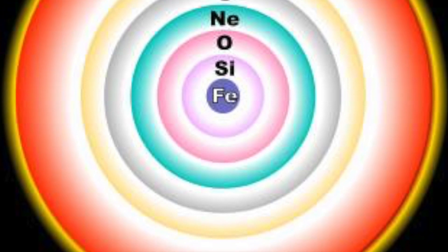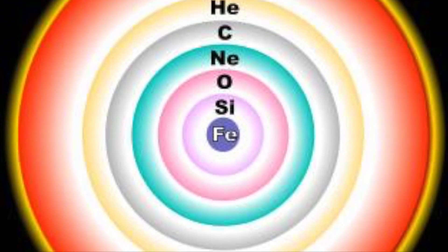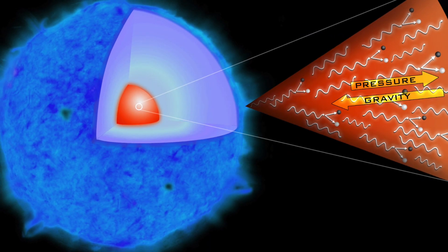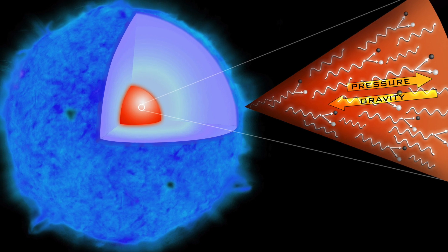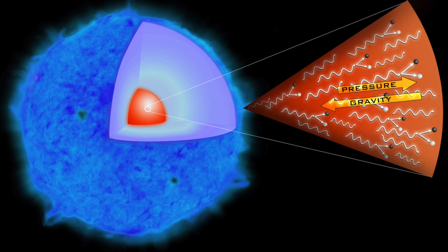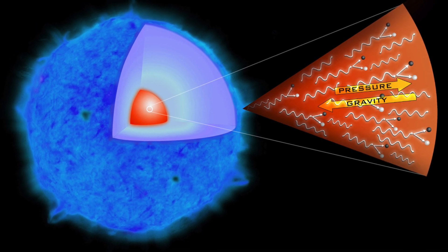Meanwhile a hypernova can actually accelerate the fusion processes, creating heavier elements like uranium. And to create things that are heavier than iron, it requires temperature and pressure at such intensity that is not found in the lifetime of a star until it dies in a hypernova.